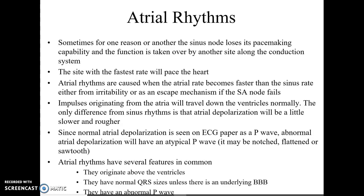Now it is possible to have underlying bundle branch blocks along with an atrial rhythm. So if you had a sinus rhythm with a bundle branch block and now all of a sudden you have an atrial rhythm, you could have that same bundle branch block there. The biggest thing with the atrial rhythms is we're going to have an abnormal P wave.